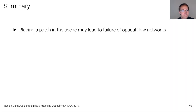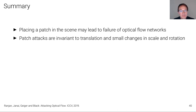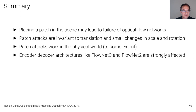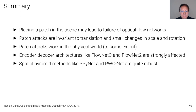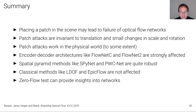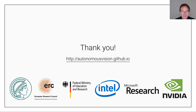Let me briefly sum up. I've demonstrated that placing a patch in the scene may lead to failure of optical flow networks, as it does for classical adversarial attack classification tasks. The patch attacks are somewhat invariant to translation and small changes in scale and rotation, and they work in the physical world at least to some extent. An important insight is that encoder-decoder architectures like FlowNet-C and FlowNet2 are strongly affected, while spatial pyramid networks like SPyNet and PWC-Net are quite robust, and classical methods like LDOF and EpicFlow are almost unaffected. I've also proposed the zero flow test, which provides valuable insights into optical flow network architectures. Thank you for your attention.